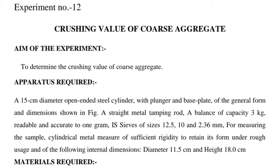Apparatus required: A 15 cm diameter open-ended steel cylinder with plunger and base plate of the general form and dimensions shown in the figure. A straight metal tamping rod. A balance of capacity 3 kg, readable and accurate to 1 gram. Sieves of sizes 12.5, 10, and 2.36 mm. For measuring the sample, a cylindrical metal measure of sufficient rigidity to retain its form under rough use, with internal dimensions: diameter 11.5 cm and height 18 cm.